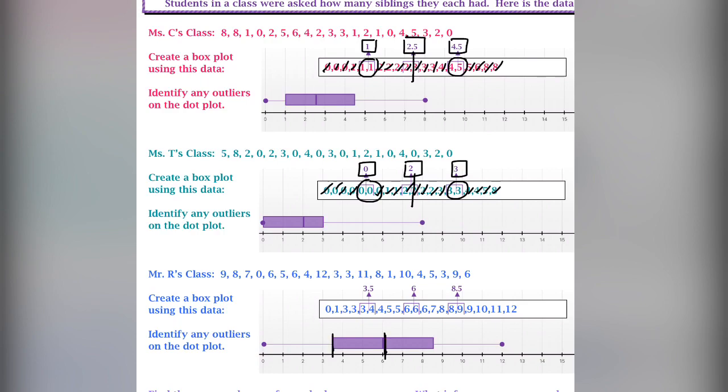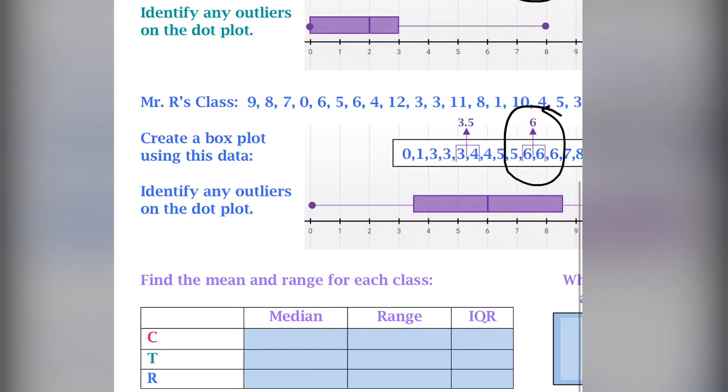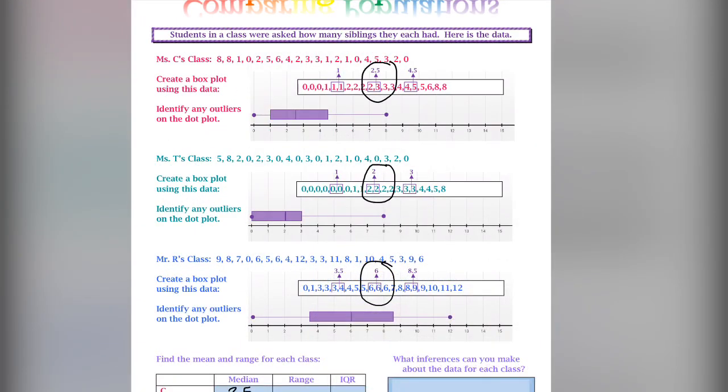Last but not least, we're going to look at Mr. R's class. And we're going to do the same thing. Now, we look at the three pieces of data, the median, the median, the median, for each class. And we have 2.5, 2, and 6. We're going to find the range for each one of them, which we did on the dot plot, but this is for the box plot. We can look at the same thing. We go from minimum to maximum, minimum to maximum, minimum to maximum. We get 8, 8, and 12.